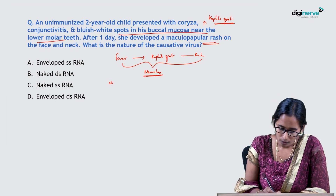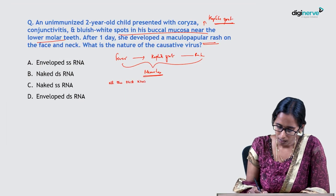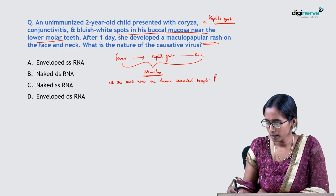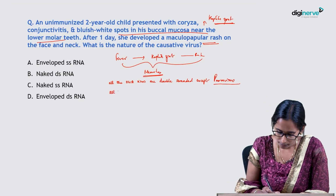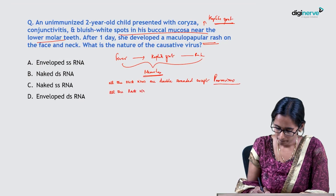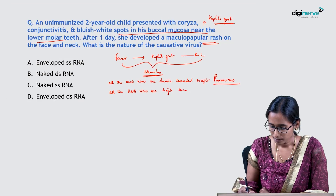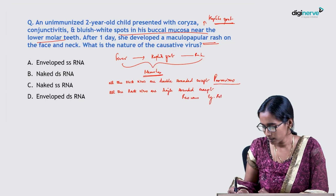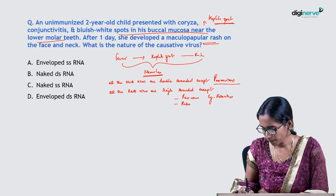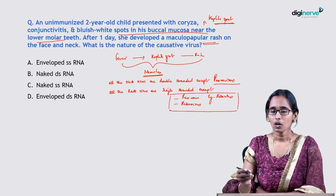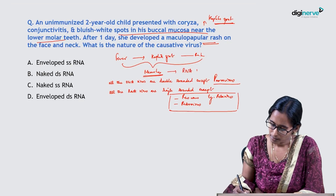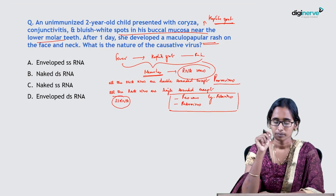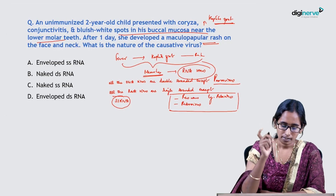One thing to remember: all DNA viruses are double-stranded except parvovirus, and all RNA viruses are single-stranded except reovirus (example: rotavirus) and retrovirus. We know that measles is an RNA virus. Since measles doesn't come under reovirus or retrovirus, the answer is single-stranded RNA virus.